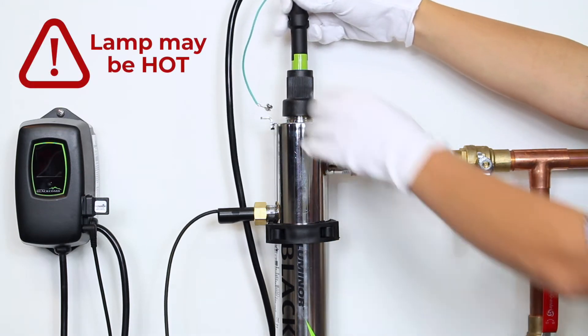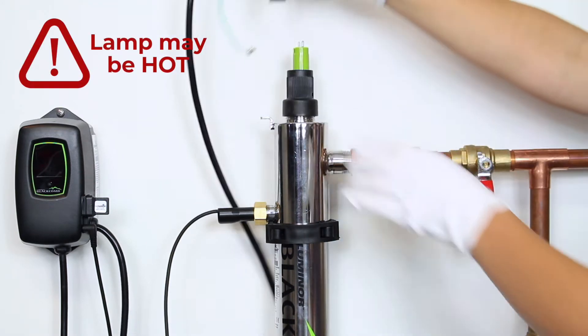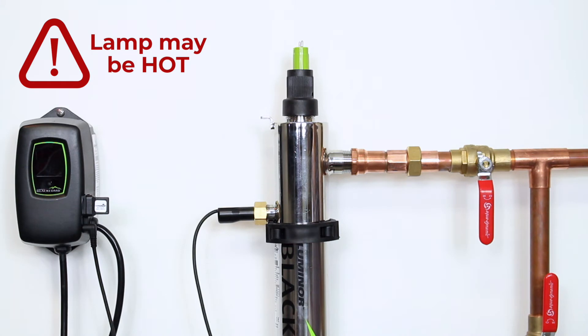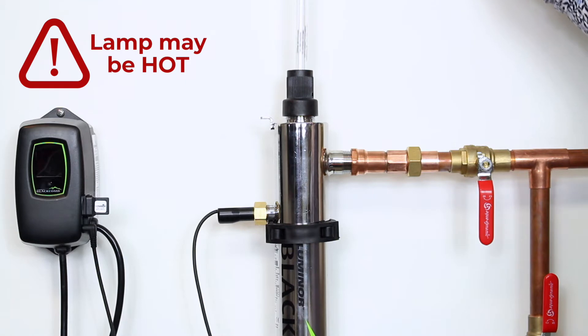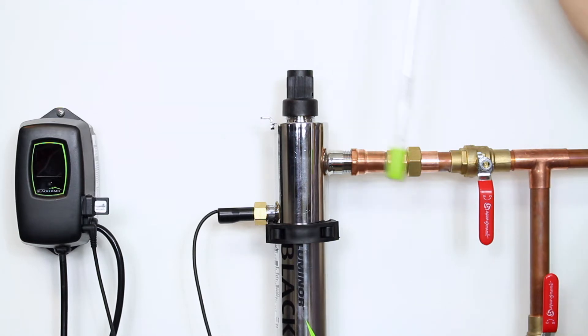Disconnect the lamp connector from the lamp. Being careful to touch only the ceramic ends, remove the lamp from the reactor. Ensure that you take it straight out as to not break the lamp.